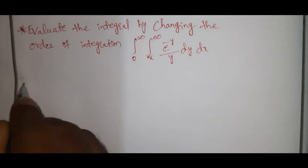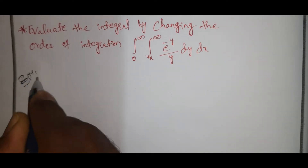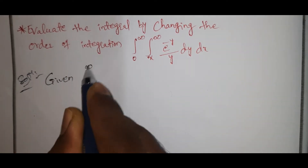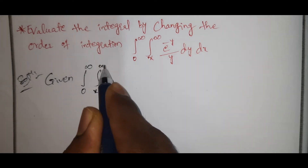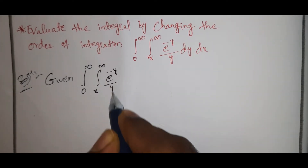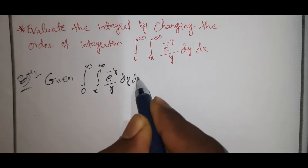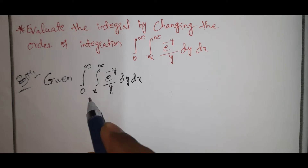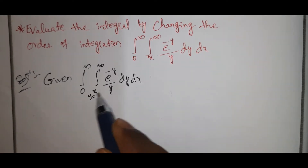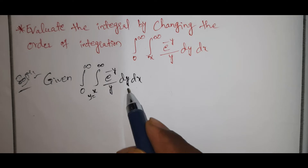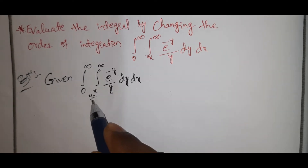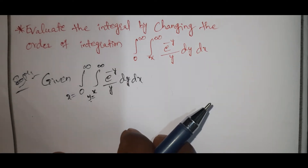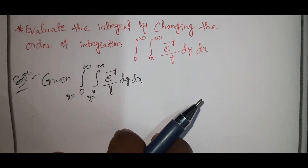We have the integral: integral from 0 to infinity, x to infinity, e power minus y by y, dy dx. Here, x tends to infinity, y tends to infinity. With respect to y, we have the limits remaining, and x tends to infinity — this is the original integral.